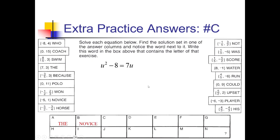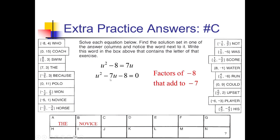For this next problem, we're trying to solve by factoring. It's not in standard form, so I need to move this 7u over to the left side by subtracting it, putting it between the u squared and the negative 8 in decreasing order of exponents. So I have u squared minus 7u minus 8 equals 0. Since I have a squared coefficient of 1, I can look for factors of negative 8 that add up to negative 7 — positive 1 and negative 8. So I've got u plus 1 and u minus 8, giving u equals negative 1 and positive 8. That's 'water' going after C.